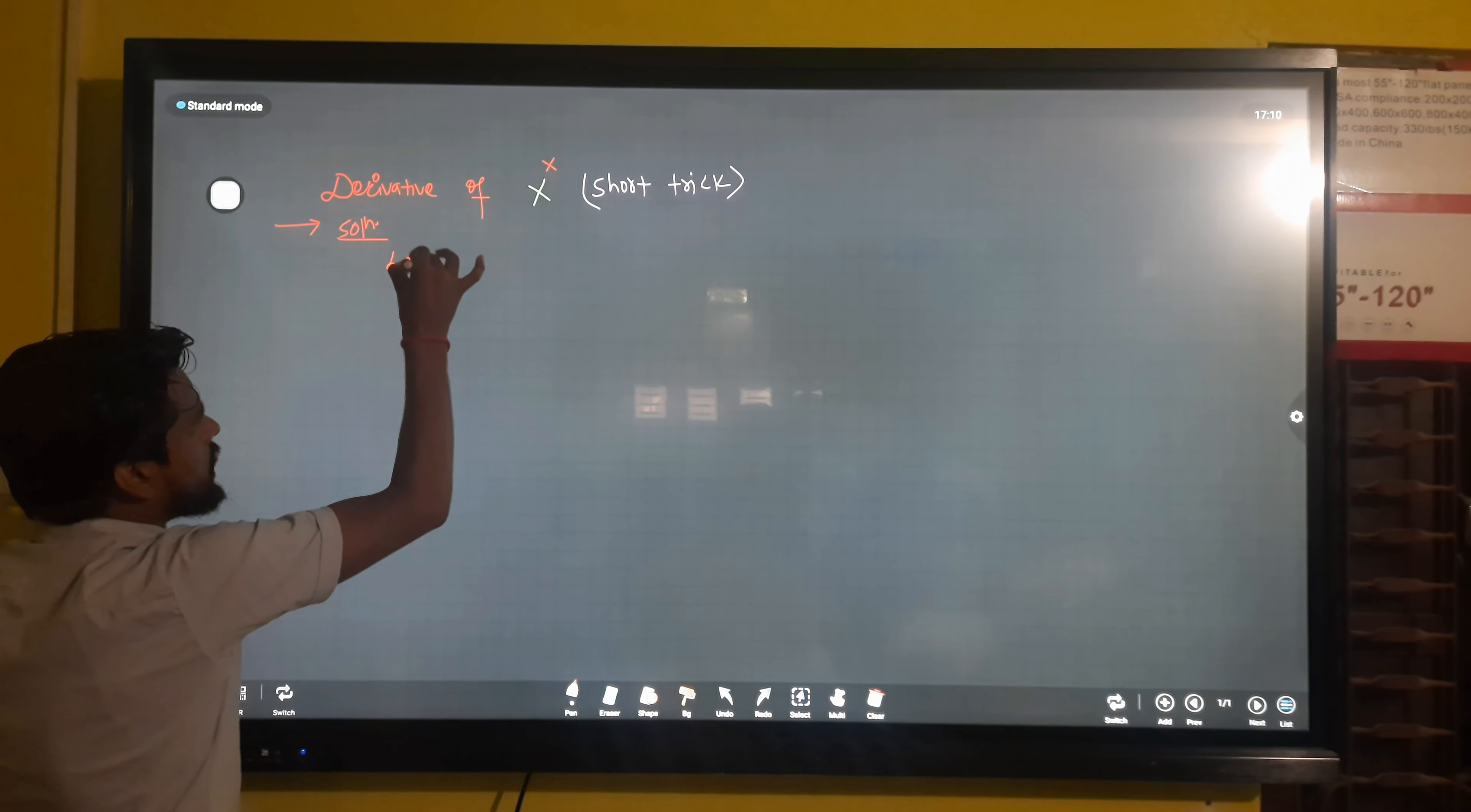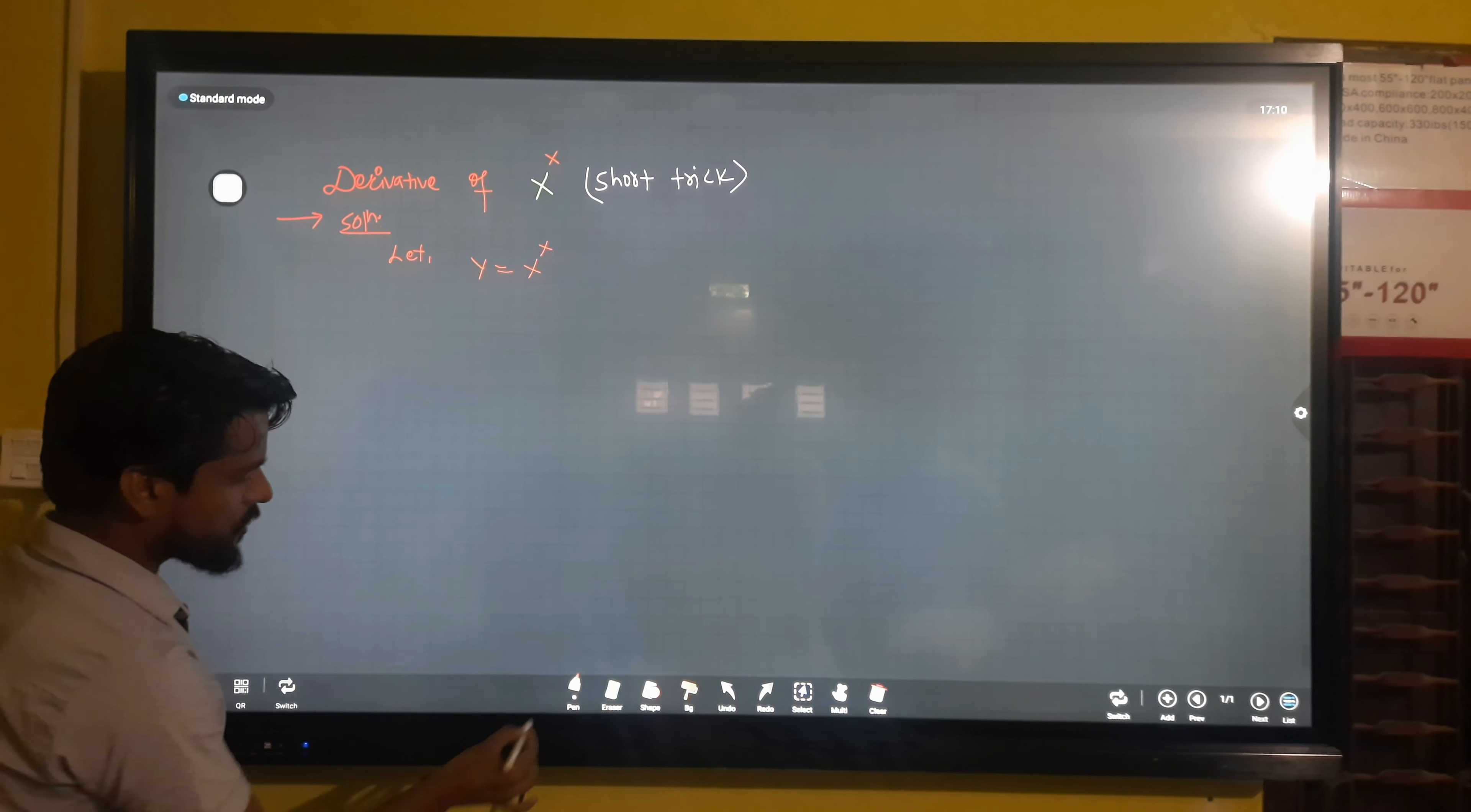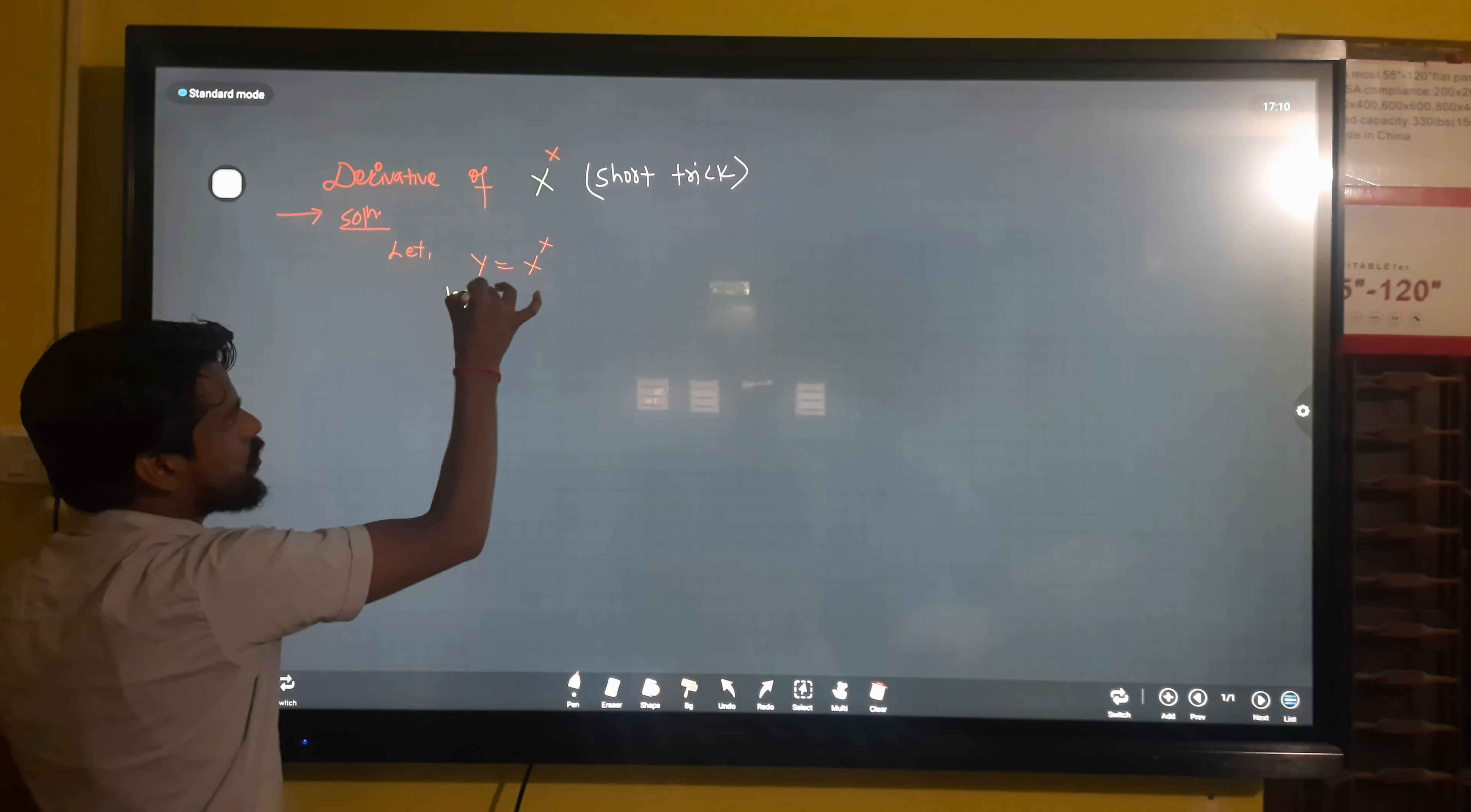Let y equals x to the power x. Since we have a power function, we need to take log on both sides. Log y equals log x to the power x.